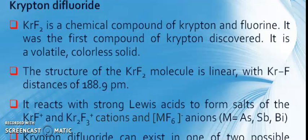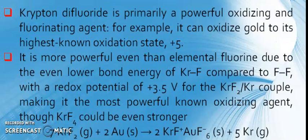So krypton difluoride, KrF2, is a chemical compound of krypton and fluorine. It was the first compound of krypton discovered. It is a volatile, colorless solid. The structure of the KrF2 molecule is linear with a Kr-F distance of 188.9 pm. It reacts with strong Lewis acids to form salts of the KrF+ and Kr2F3+ cations and MF6- anions where M equals As, Sb, Bi.